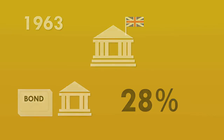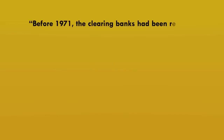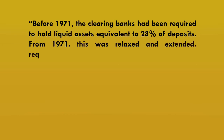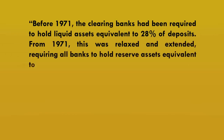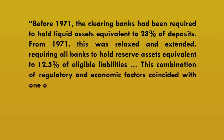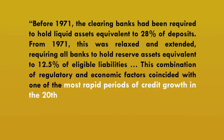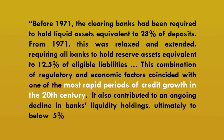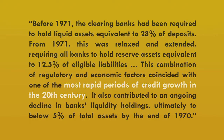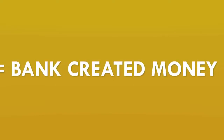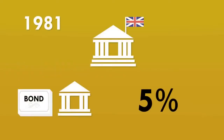In the words of the Bank of England: before 1971, the clearing banks had been required to hold liquid assets equivalent to 28% of deposits. From 1971, this was relaxed and extended, requiring all banks to hold reserve assets equivalent to 12.5% of eligible liabilities. This combination of regulatory and economic factors coincided with one of the most rapid periods of credit growth in the 20th century, contributing to an ongoing decline in banks' liquidity holdings — ultimately to below 5% of total assets by the end of the 1970s. 'Credit growth' here really means a massive expansion in bank-created money and consequently a massive rise in debt.